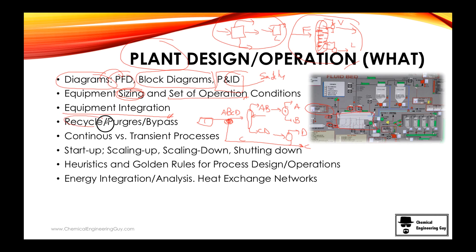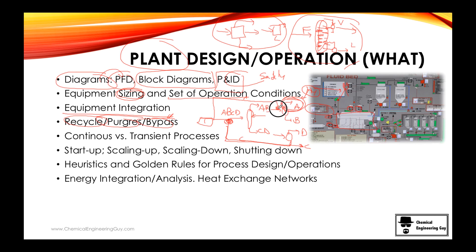We'll also look at recycle, purge, and bypass. Recycle brings material back into the process. Purge removes unwanted components — for example, hydrogen gets sent to a flare and burned. Bypass is when you take a little from the original feed and route it around a unit, for instance to dilute a product. We'll cover plenty of rules and simplifications for recycles, purges, and bypasses.